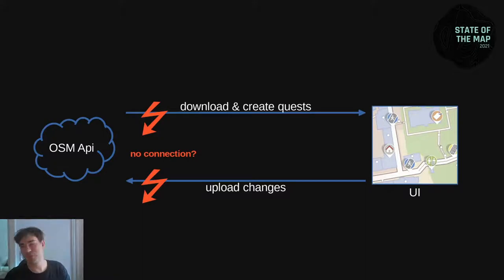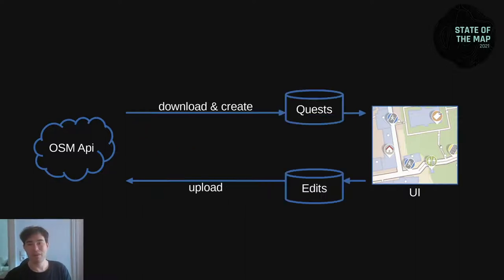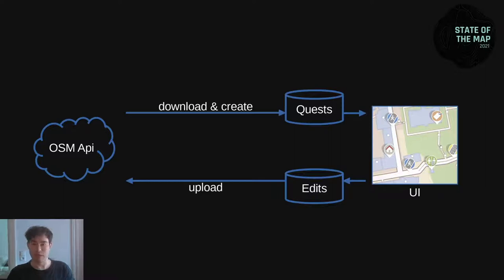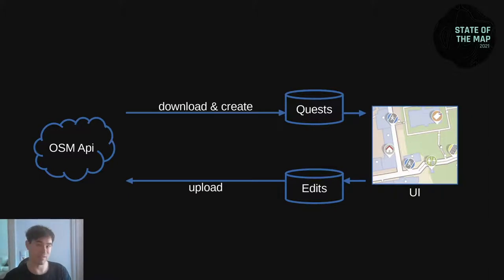Also, if we close the app or send it into the background, all data might have to be downloaded again. Easy fix: we just persist the quests after we create them in a local database. Whenever the quest database changes, we update the UI. Whenever we create an edit, we persist it into the database. Whenever the edits database changes, we trigger the upload. So when the upload fails, the edit remains in the database. You can reboot the smartphone, close the app — when you restart, the quests will be there again. This has been the basic architecture of StreetComplete until version 31.